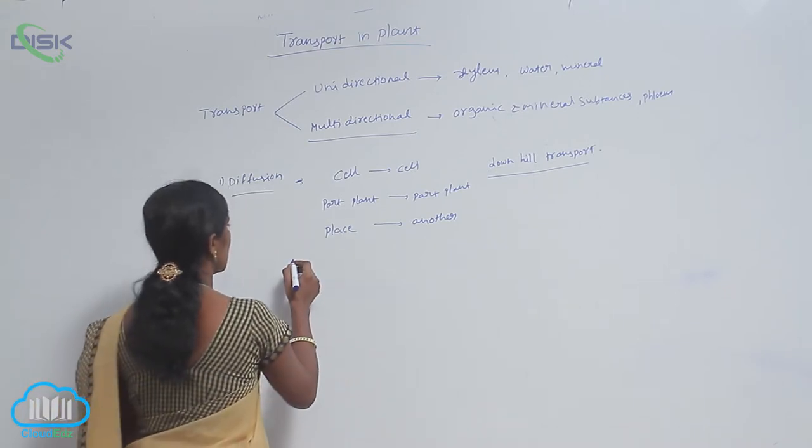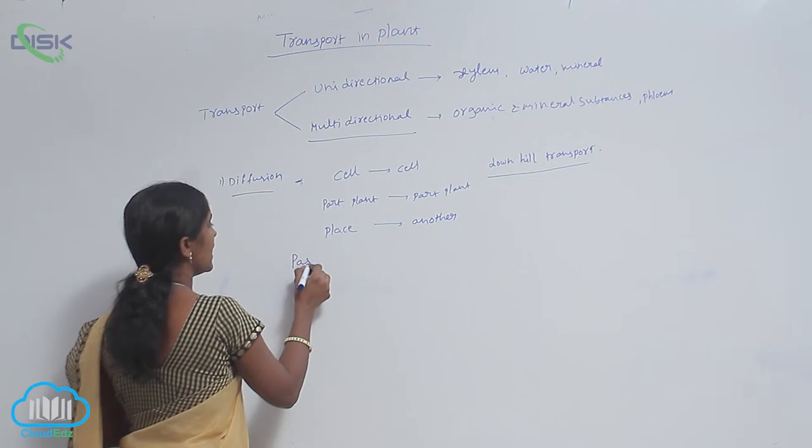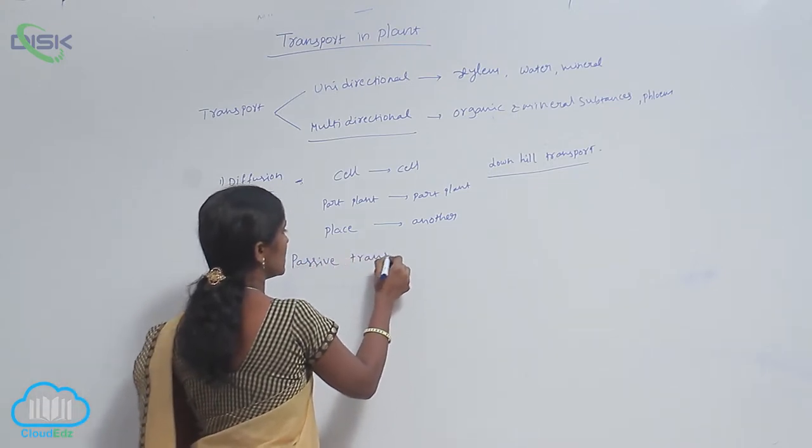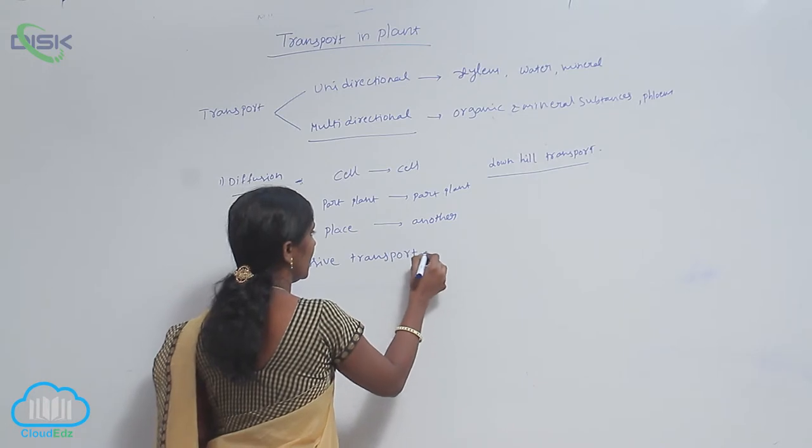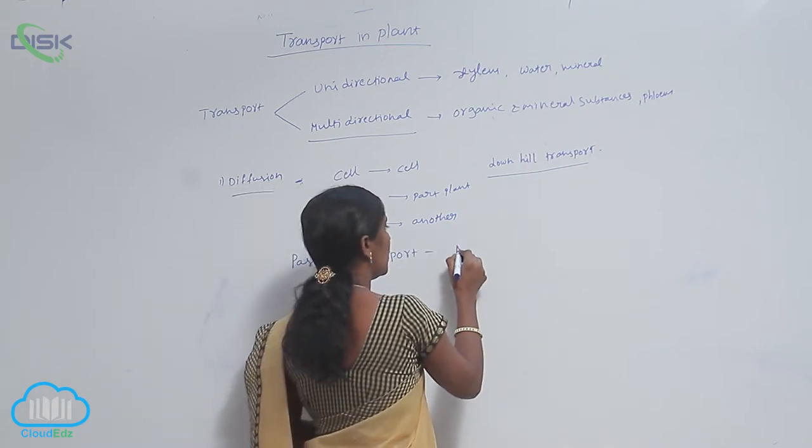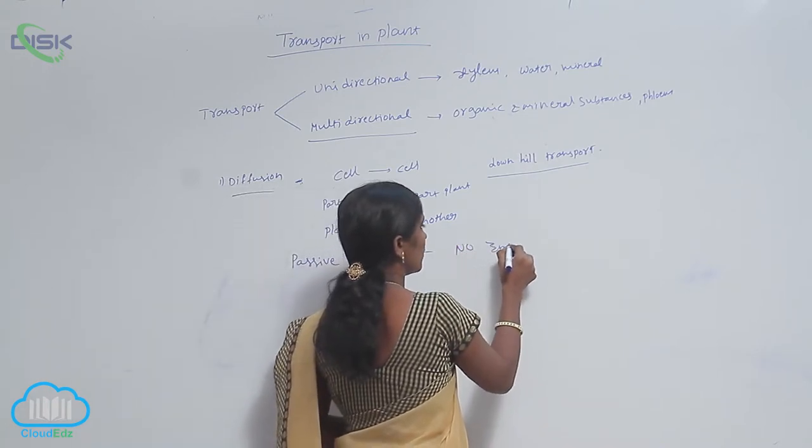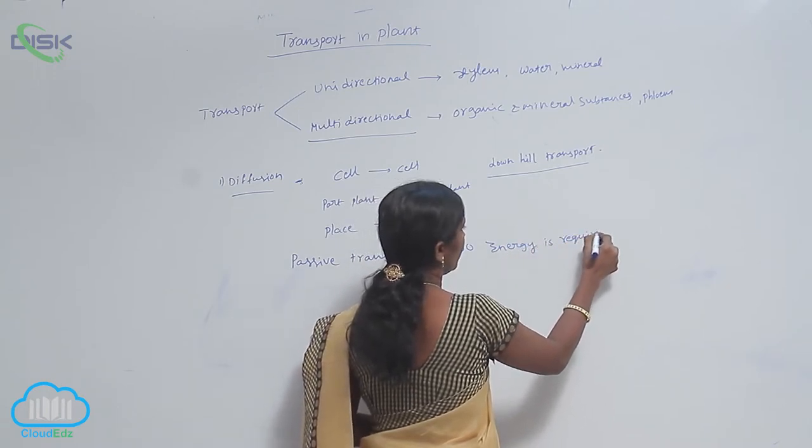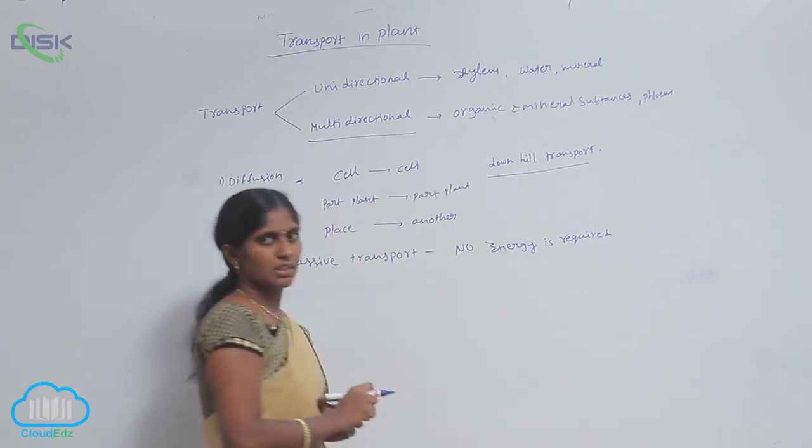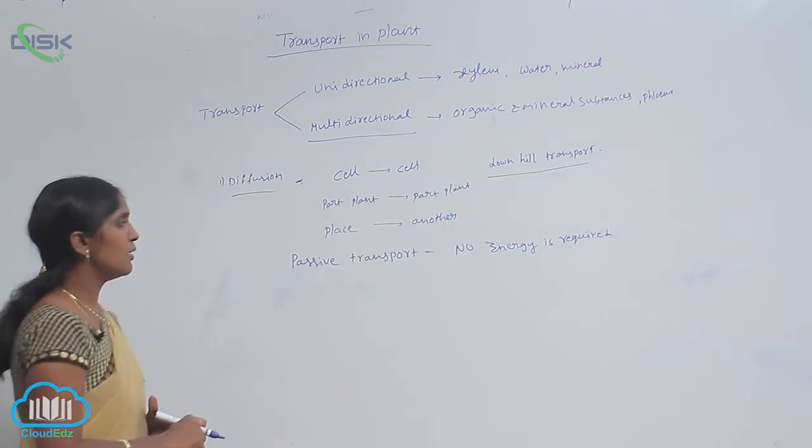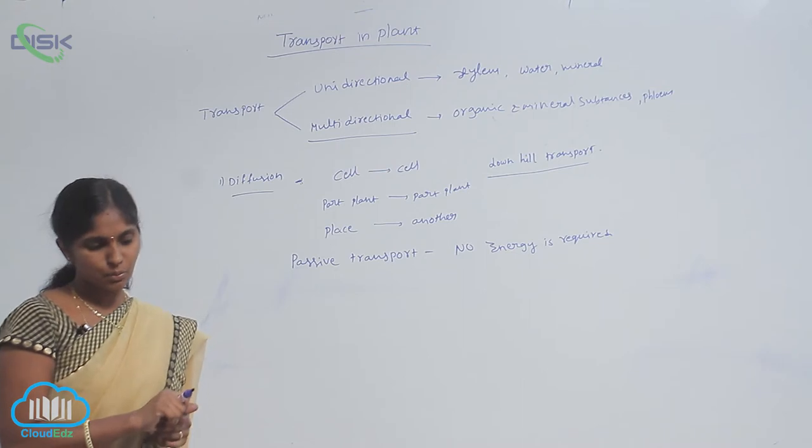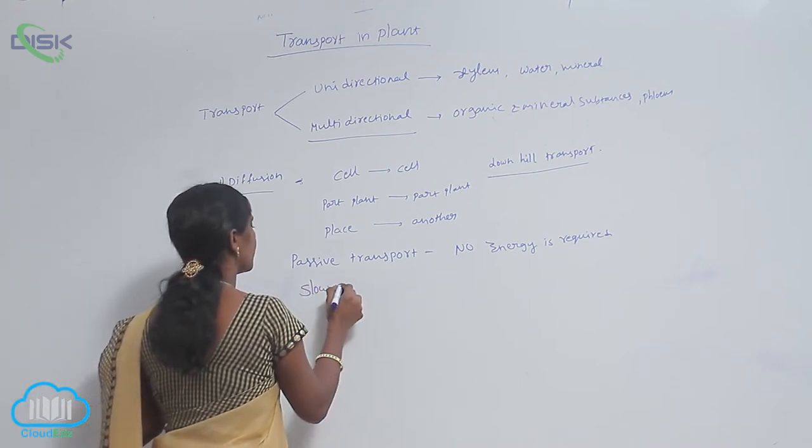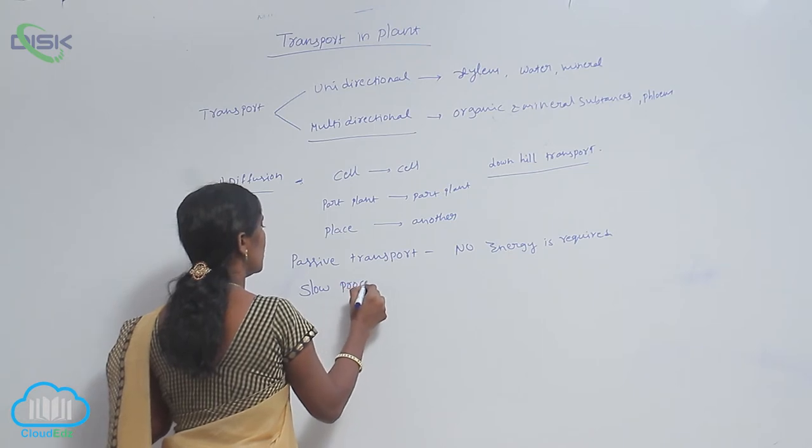And diffusion is a passive transport. Why is it passive transport? Here, no energy is required per movement. Hence, it is called passive transport and it is a slow process.